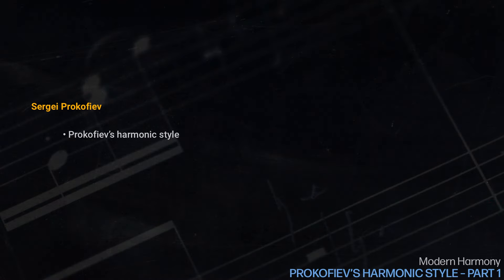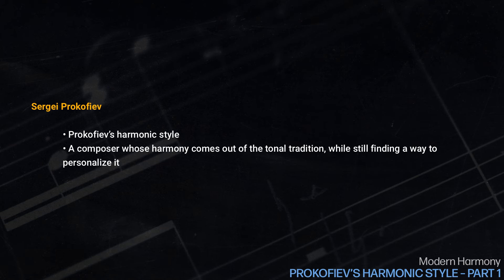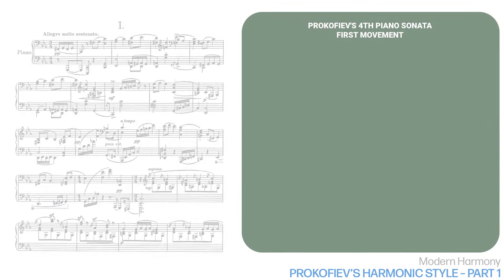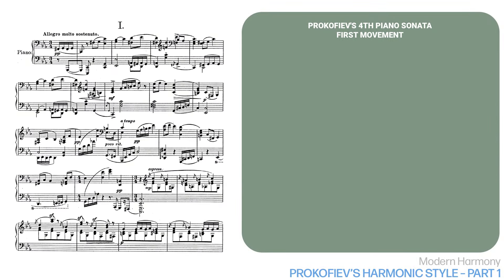In this lesson, we'll look at Prokofiev's harmonic style. Prokofiev is a good example of a composer whose harmony comes out of the tonal tradition while still finding a way to personalize it. Here we'll look at the first movement of his fourth piano sonata. Let's listen to the beginning of this movement.